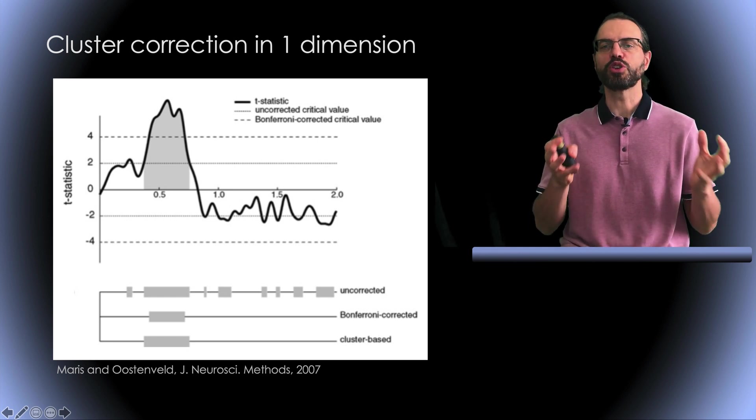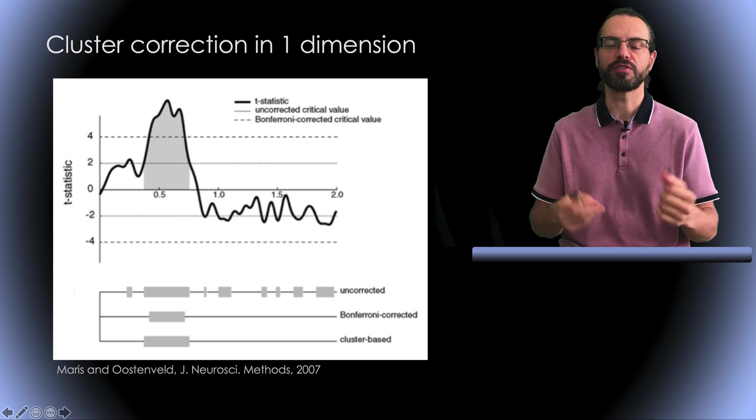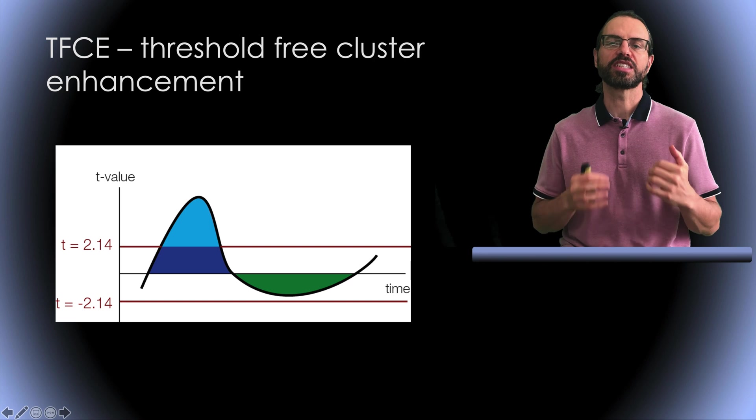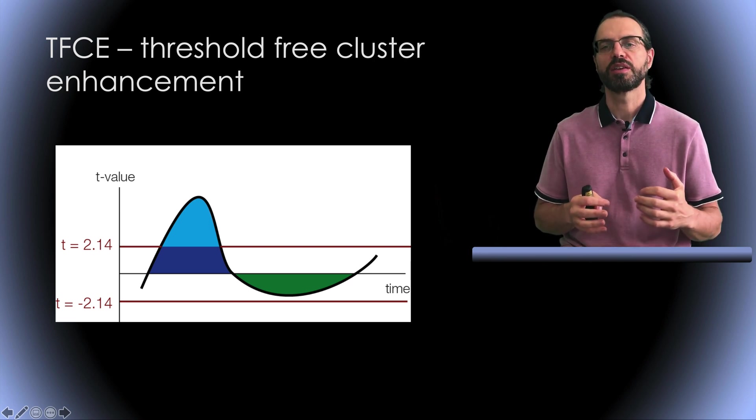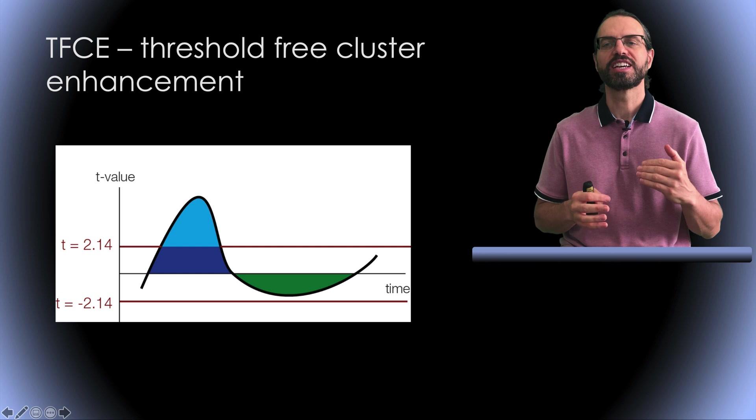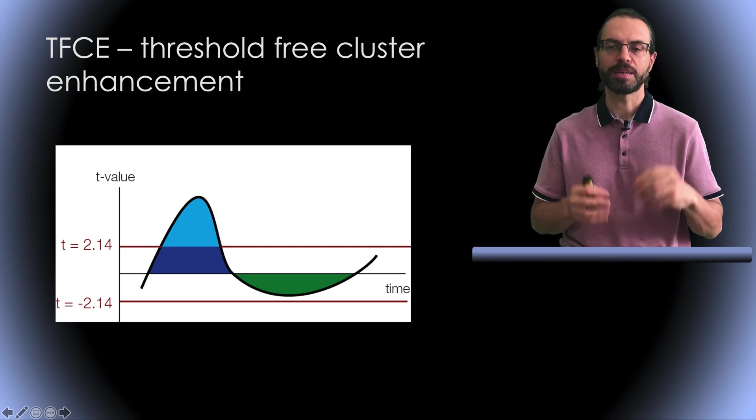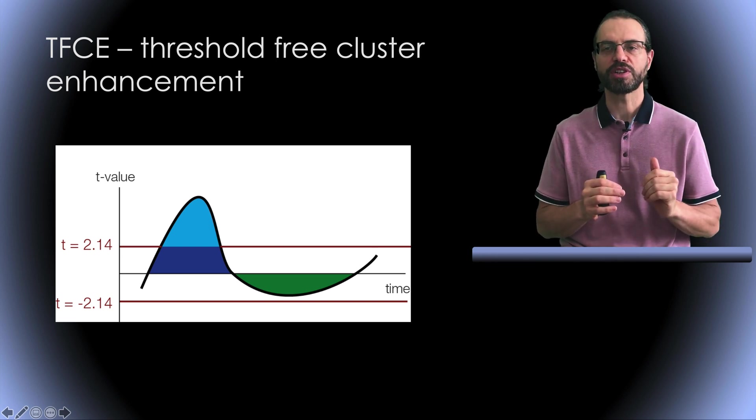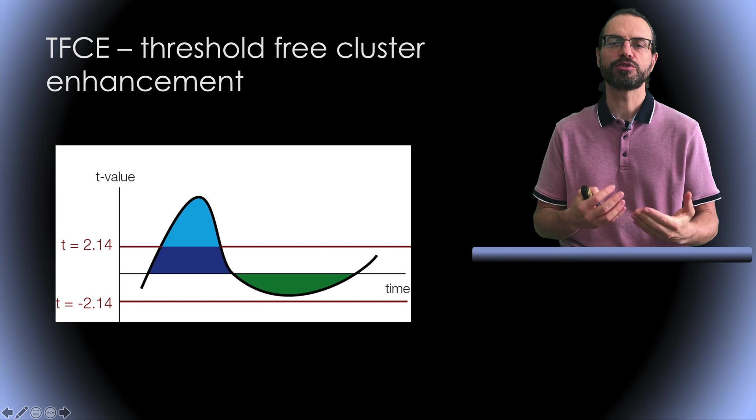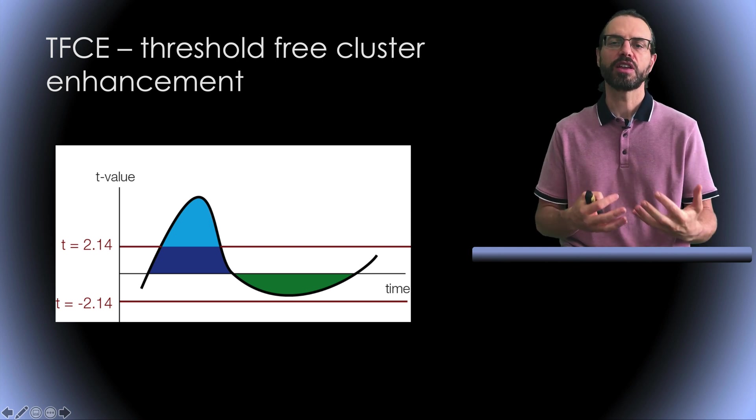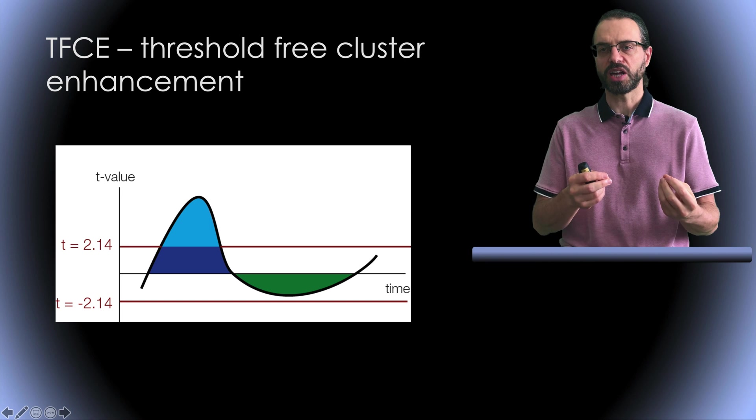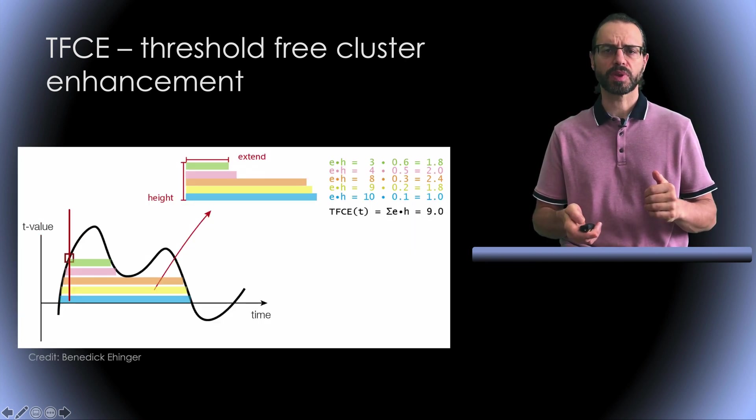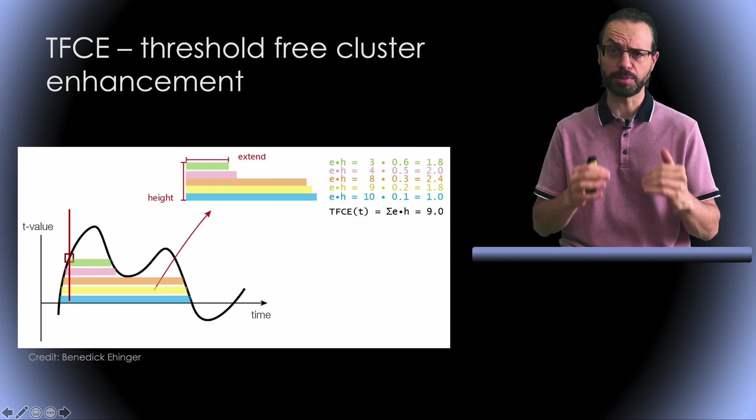One issue with this method is that sometimes we may have large clusters below our statistical threshold, and they are not considered significant. For example, here we have two clusters, a positive cluster in blue and a negative cluster in green. The blue cluster is above the T-value threshold and ends up being significant, but not the green one. So, is there a method not constrained by the arbitrary statistical threshold?